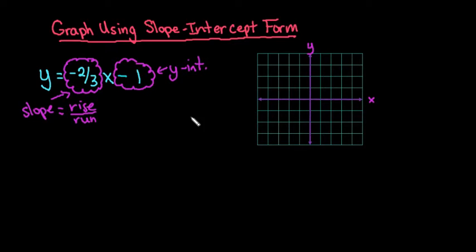So as far as the process goes of graphing this, you always start at the y-intercept. So we would go to our y-axis, always go to the y-axis, not the x-axis, and we would go to where y equals negative 1, and that's going to be our starting point.